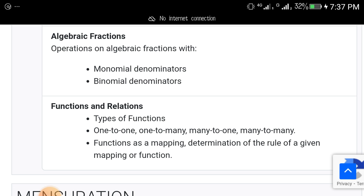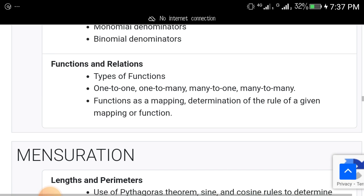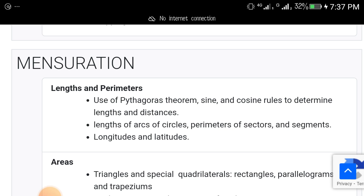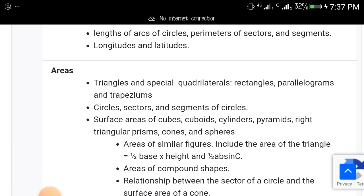Linear inequalities, algebraic fractions, functions and relations. Another area to look at in iterations is length and perimeters. This one has to do with Pythagorean theorem, sine rule, cosine rule, arc lengths, perimeters of sectors, segments, longitude and latitude. These are very very important topics.